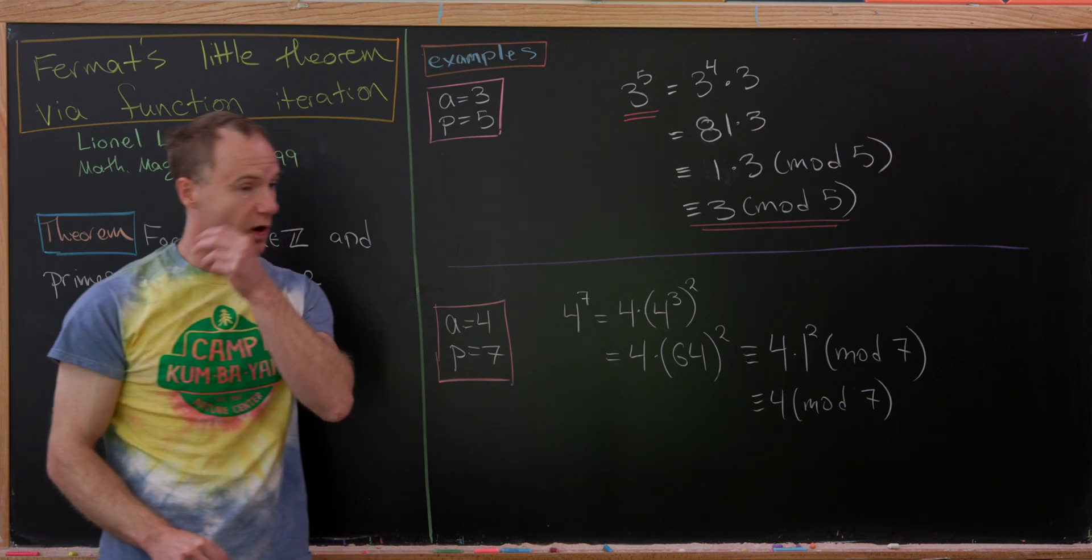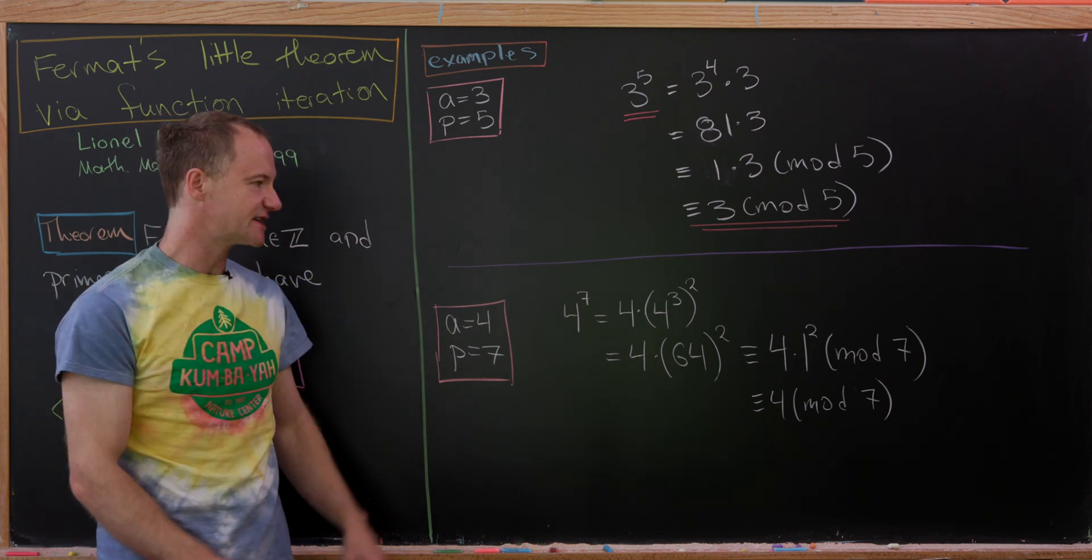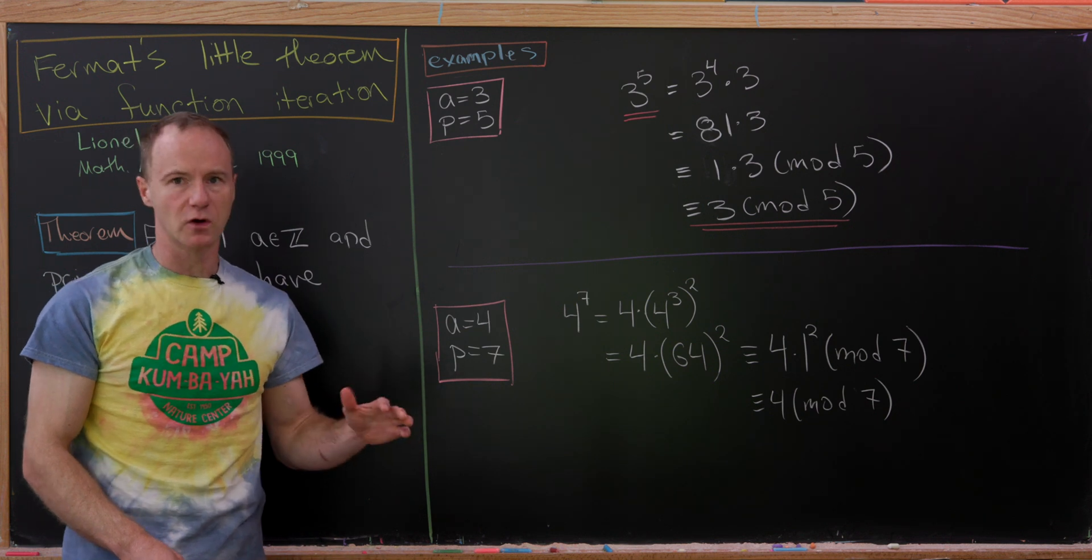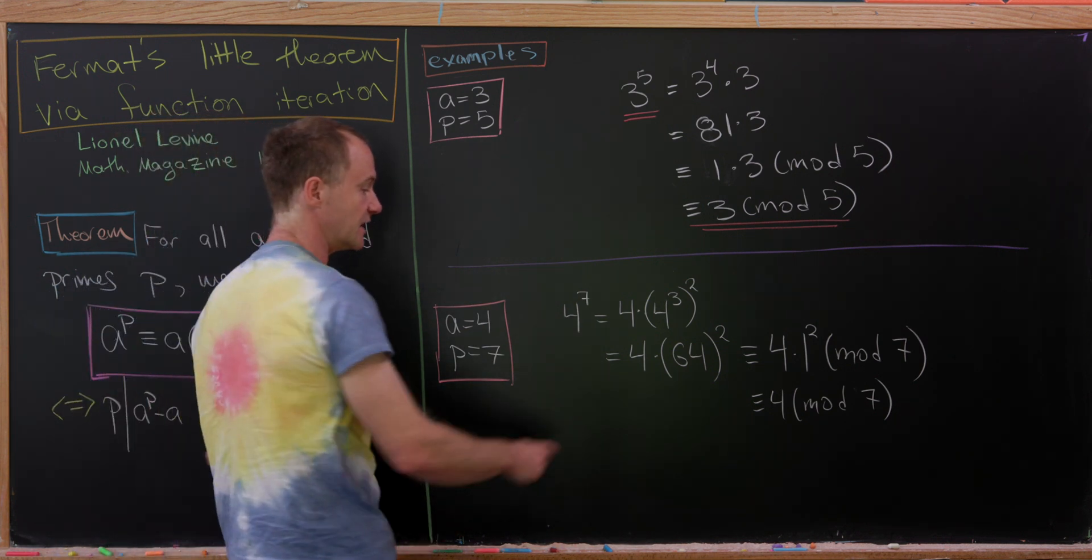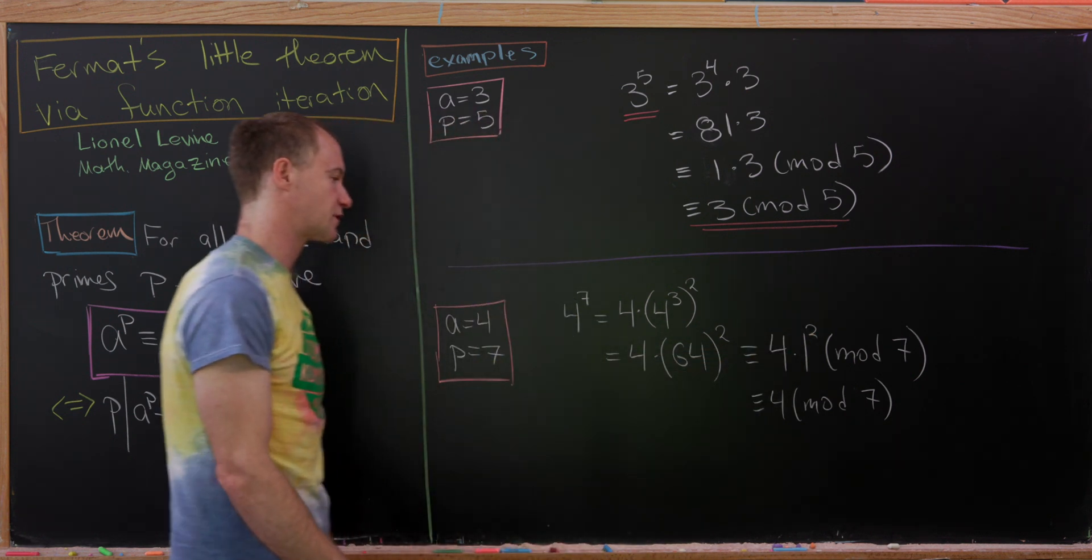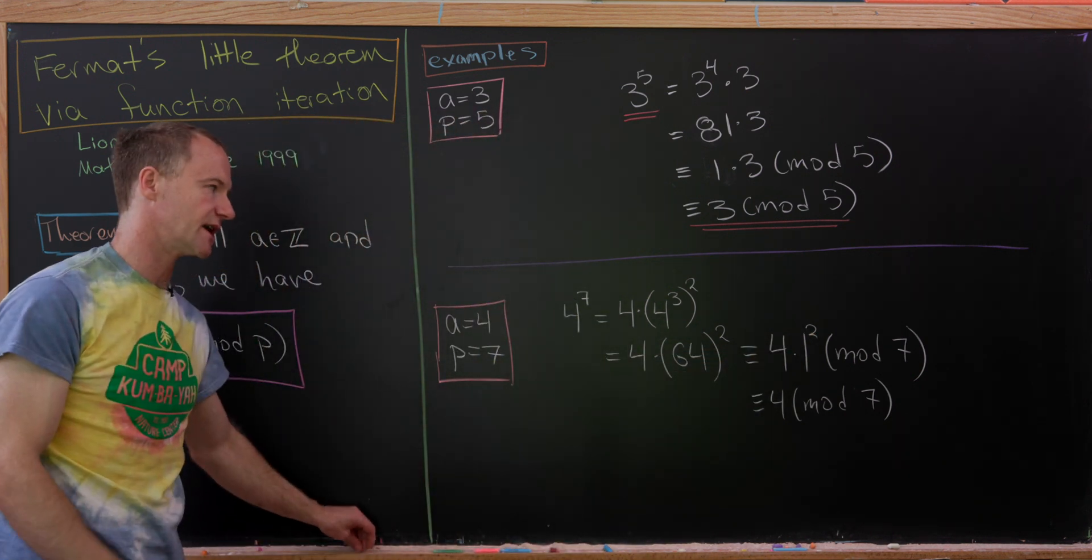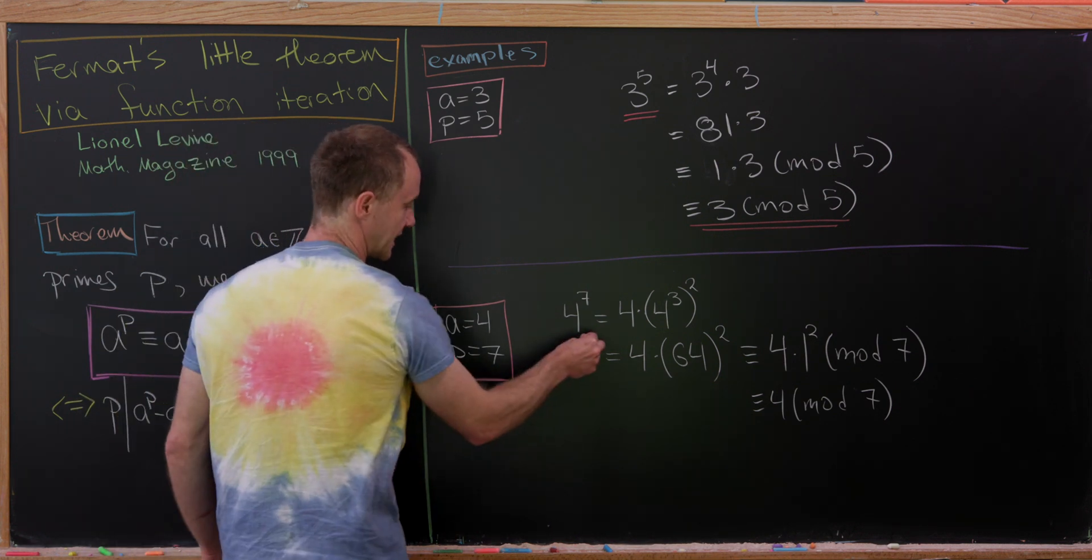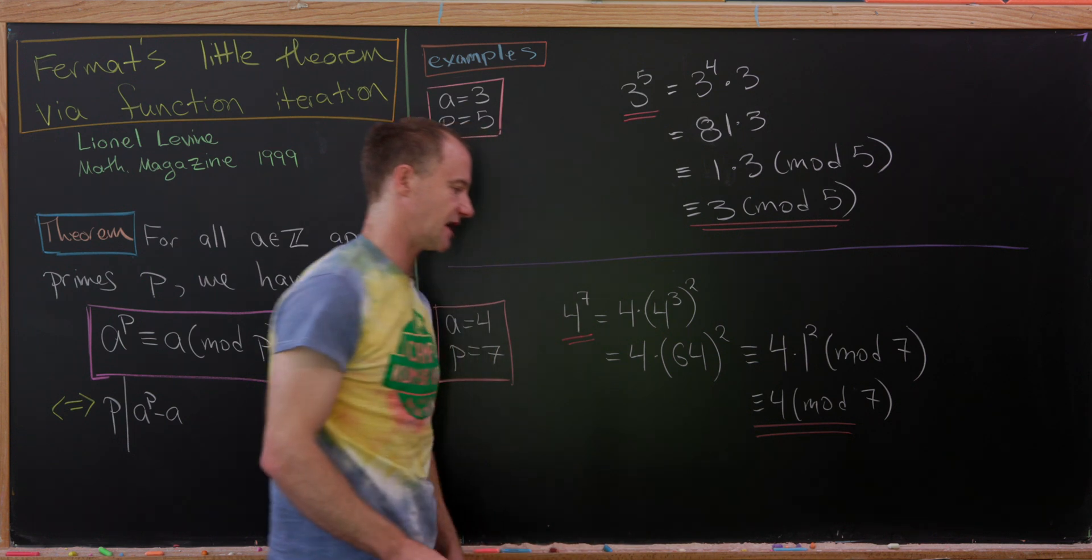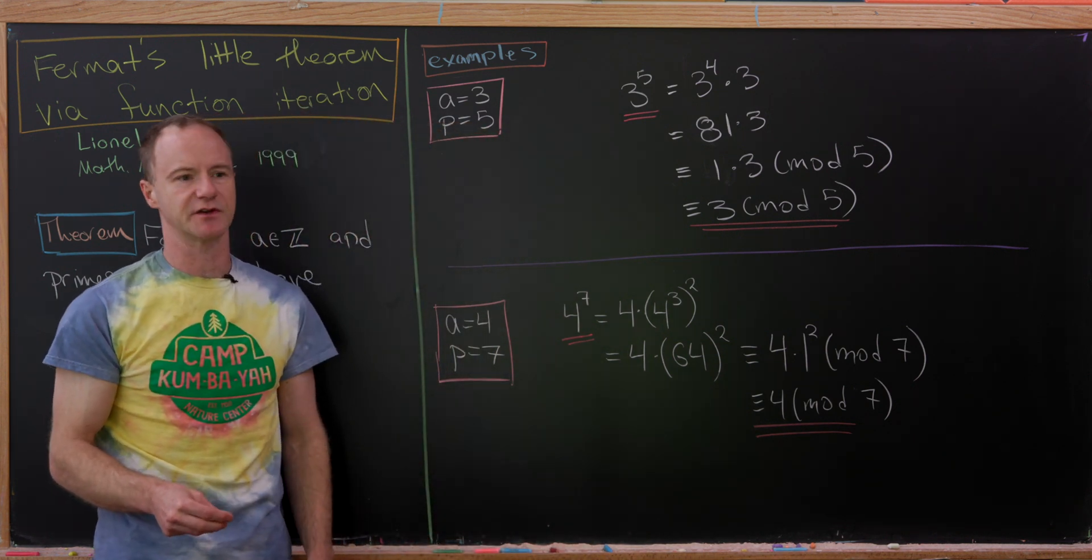But 64 is 1 more than 63, and 63 is a multiple of 7. So that means 64 is congruent to 1 mod 7. So that means when we reduce mod 7, we get 4 times 1 squared, or 4 mod 7. But now again, if we look at this from the extreme left to right-hand side, we see that this also satisfies Fermat's Little Theorem.